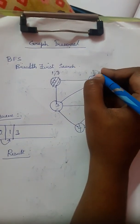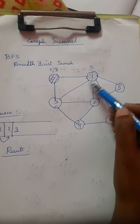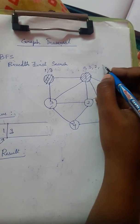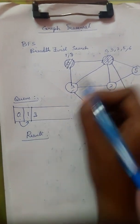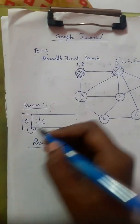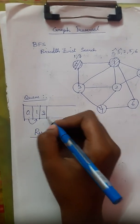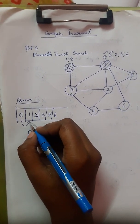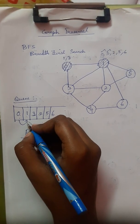The order of visiting adjacent nodes can vary — visiting 1 then 3 or 3 then 1 is acceptable. After visiting node 0, we move to visit node 1. The elements adjacent to node 1 are: zero (already visited), three, two, five, and six.